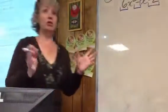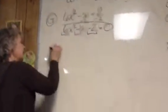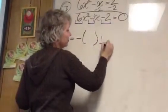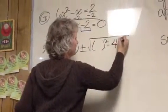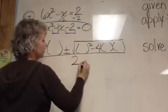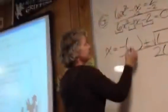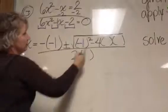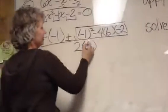So x equals negative B plus or minus square root B squared minus 4AC all over 2A. Okay, so opposite of B plus or minus B squared minus 4AC all over 2A.